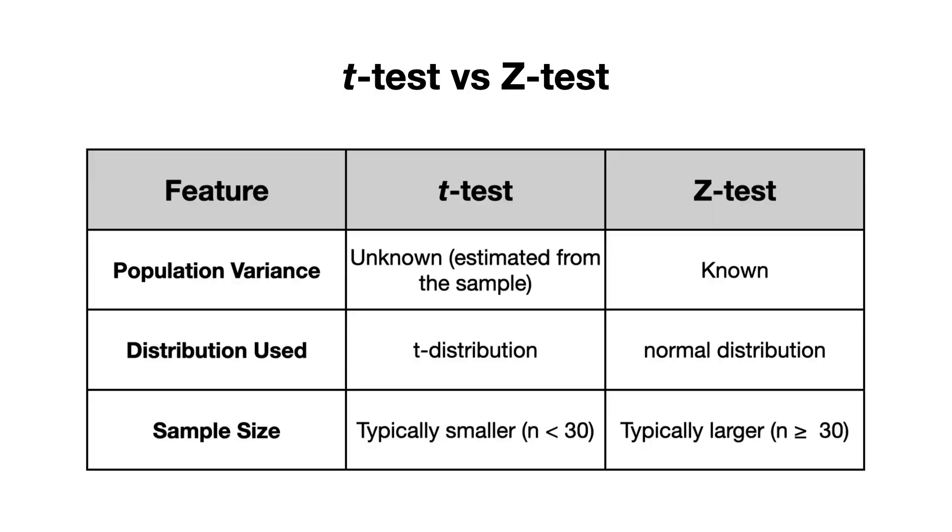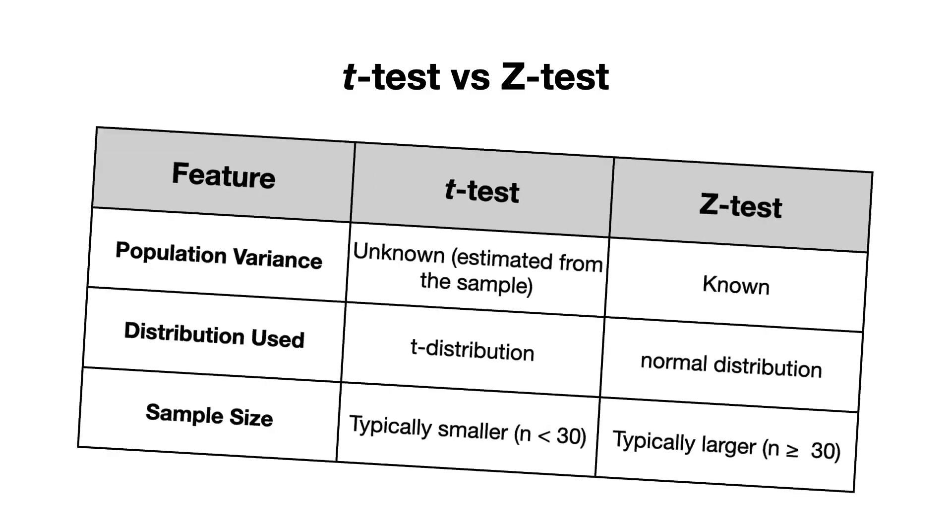Now, to help summarize, here is a quick table that highlights the main differences between the T-test and the Z-test. In short, you should use a Z-test if you know the population variance, and if you are estimating the variance from the given sample, the T-test is your go-to. I hope this table and explanation make it clearer when it comes to choosing each test.